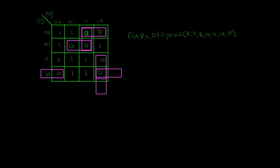We have the pair that wraps around right here. Just like we did with sum of products, we want to locate our distinguished terms — in this case they're going to be distinguished zeros. We only have one prime implicate around this zero, one prime implicate around this zero, and one prime implicate around this zero. So we're definitely going to use the prime implicants that are around those distinguished zeros.